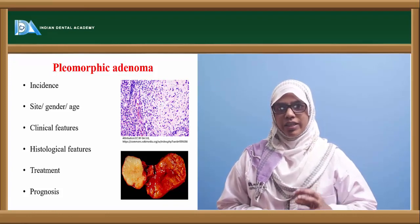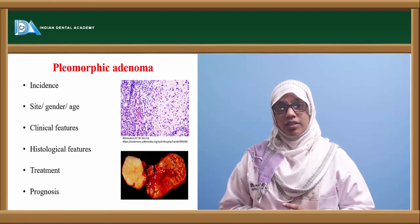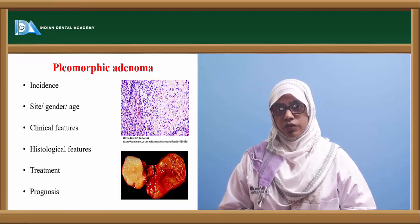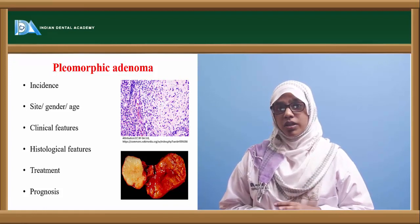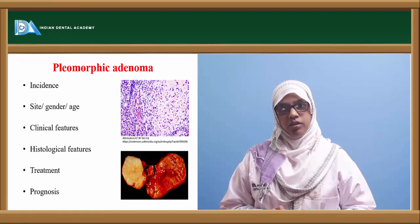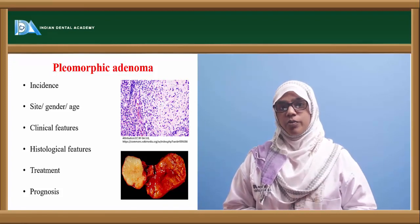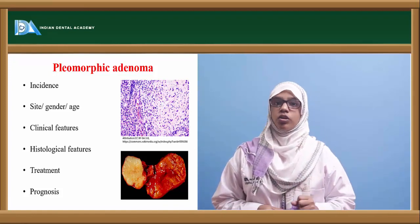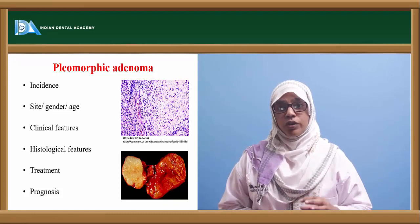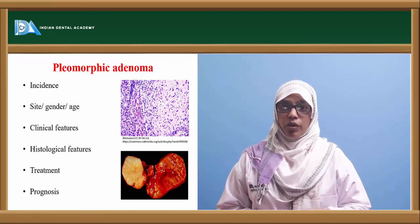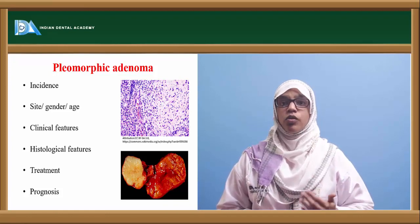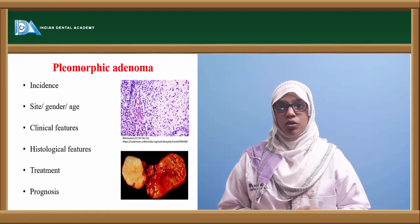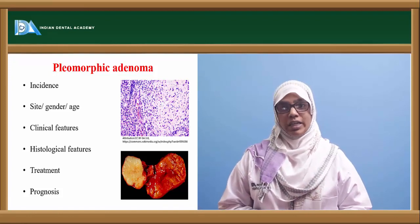The swelling gradually increases in size and tries to elevate the ear lobe. It is associated with pain if the swelling is too large, due to the unyielding nature of the swelling, or because of infection that has occurred in the tumour. The swelling is firm in consistency and it does not stick to or become fixed to the underlying structure or the overlying skin, which is very important to differentiate it from malignant pleomorphic adenoma.